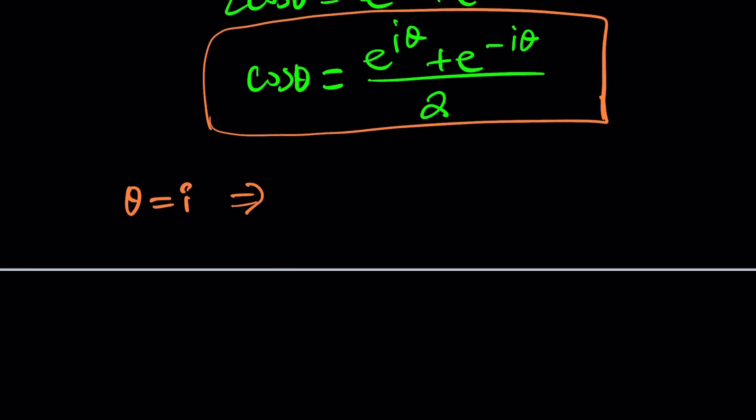So if you replace θ with i, you get cosine of i. Let's use parentheses. I usually don't, but let's use it so it doesn't look like cosi, right? Okay. So this will look like this. You will replace θ with i. So it's going to be e to the power i times i, which is i².